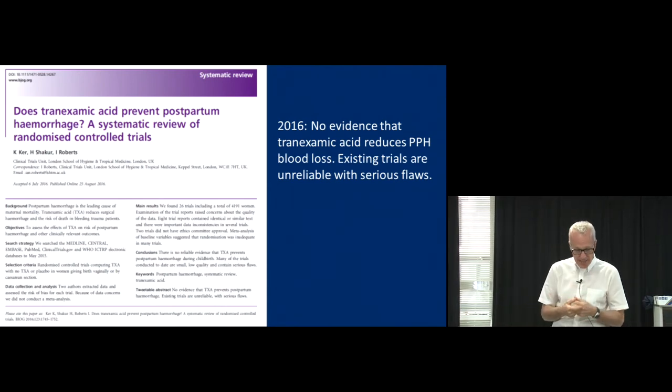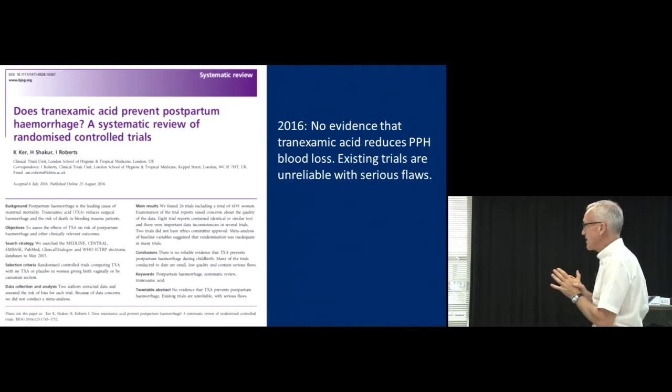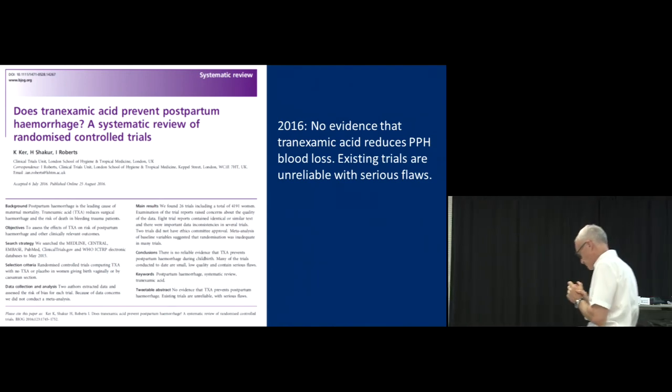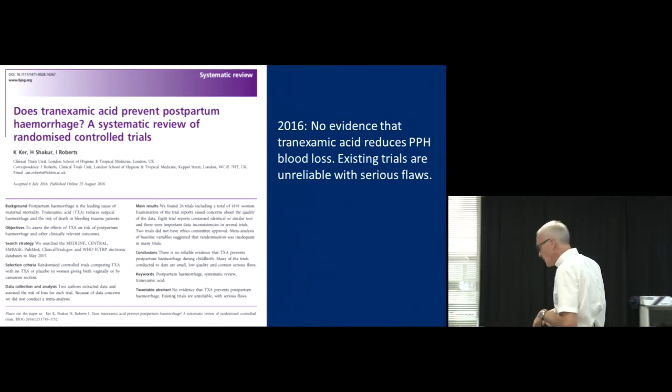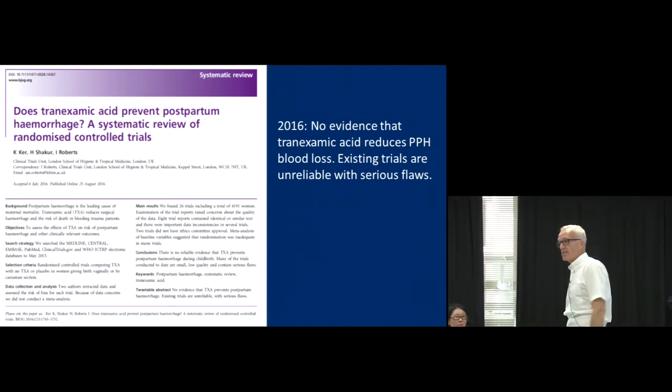We showed the baseline variables, wrote to authors asking for their data, checked it and found it was wrong in many cases. We asked about ethics committee approval, checked with the ethics committees, and found many cases where there was no ethics committee approval despite claims there was. The authors admitted: 'You're right, we didn't get ethics committee approval.' So we had all of this evidence and said: let's just tell the truth. We sent the paper to The Lancet.